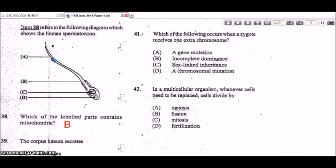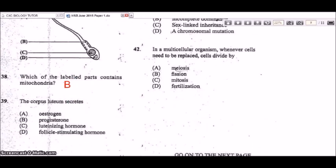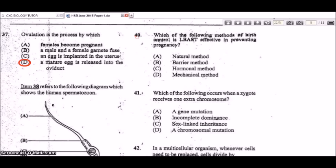A is pointing at the tail, C at the nucleus, and D at the acrosome, which contains digestive enzymes. Question 39: the corpus luteum secretes progesterone. The corpus luteum is the empty follicle, and it secretes progesterone to prepare for pregnancy.